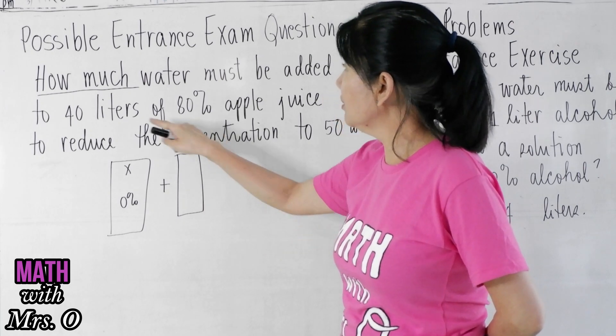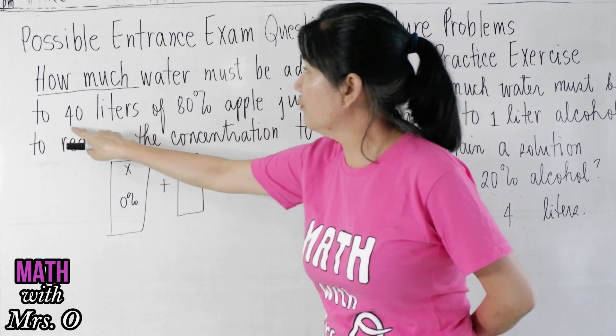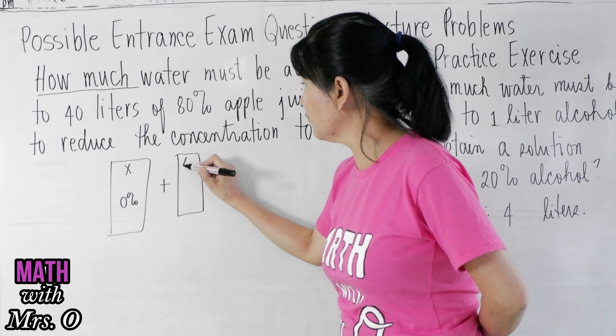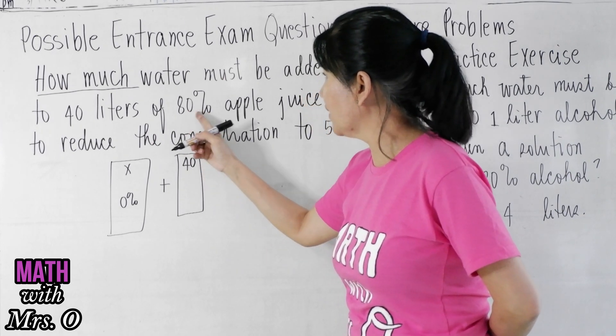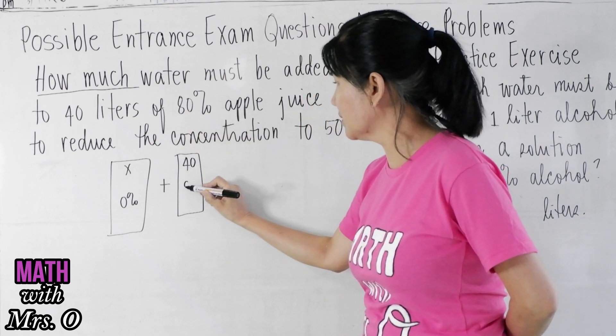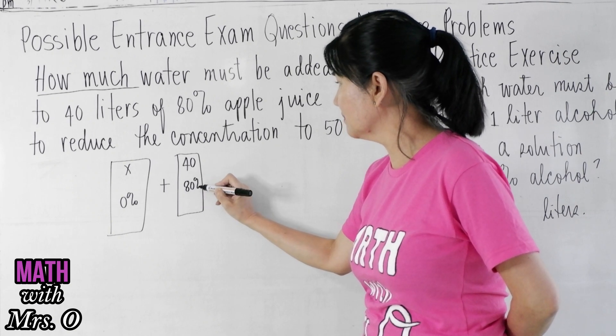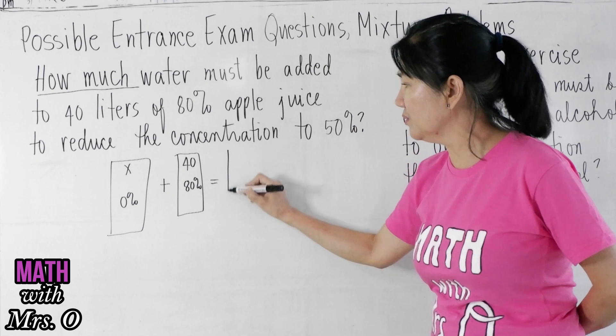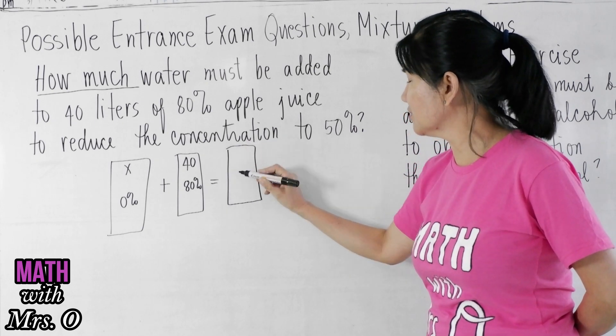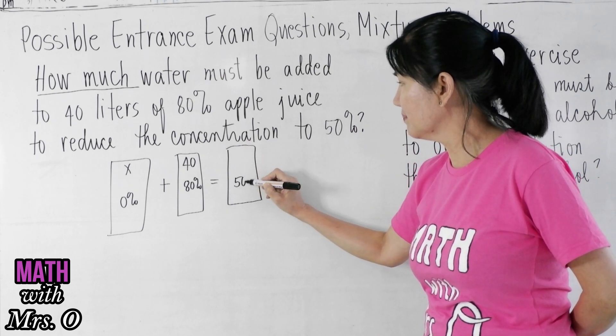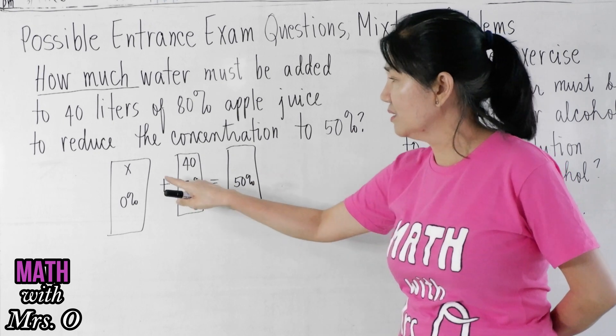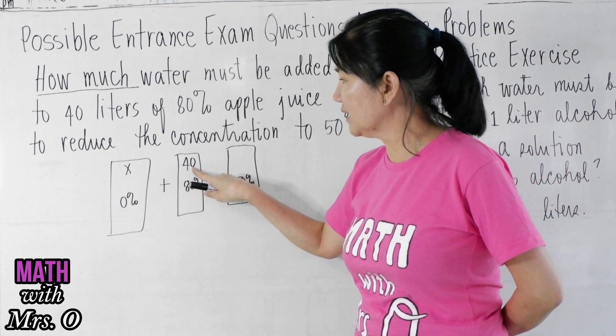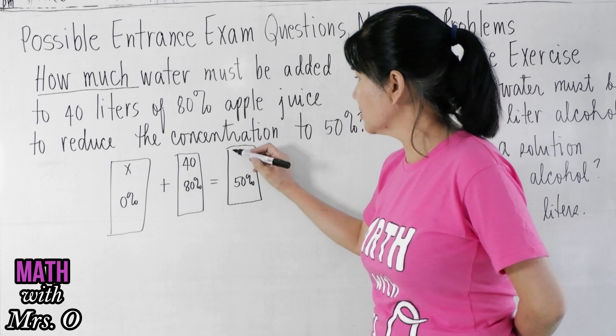To reduce, so that should give you the concentration to 50%, 50%. You added 40 liters to x, so this will give you x plus 40.